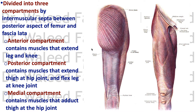The thigh is divided into three compartments by the intermuscular septa. The deep fascia usually forms septa in the limbs. It forms medial and lateral intermuscular septa in the thigh, attached to the corresponding lips of the linea aspera, separating the thigh into three compartments. The anterior compartment contains muscles that extend the leg at the knee joint. The posterior compartment contains muscles that extend the hip joint and flex the knee joint, like the hamstrings. And the medial compartment contains the adductors, which adduct the thigh at the hip joint.